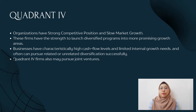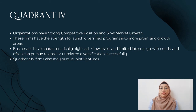Finally, quadrant four organizations have a strong competitive position but slow market growth. Firms in this quadrant have the strength to launch diversified programs into more promising growth areas. They also have characteristically high cash flow levels, limited internal growth needs, and can often pursue related or unrelated diversification successfully. Quadrant four firms may also pursue joint ventures.